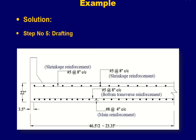The final design summary: at the bottom, the main longitudinal reinforcement is No. 8 at 4 inches center to center, and the transverse reinforcement is No. 5 at 8 inches center to center. At the top, both longitudinal and transverse directions use No. 5 at 8 inches center to center as shrinkage reinforcement. The total deck slab thickness is 22 inches, the first bar is placed at 3.5 inches from the support face, and the total width is 46.5 feet shown for half the slab in the drawing.